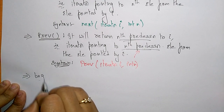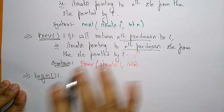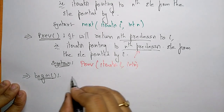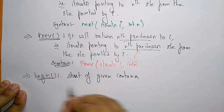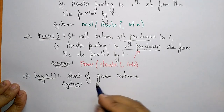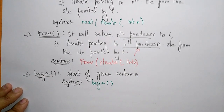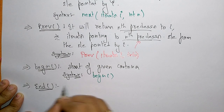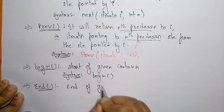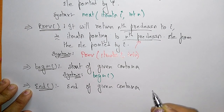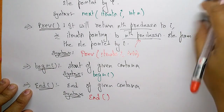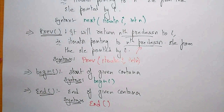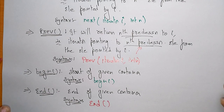The begin function returns an iterator to the start of the given container — the syntax is just begin() with no arguments. The end function returns an iterator to the end of the given container — syntax is end() with no arguments. These are the different operations on iterators in STL. In the next video, I'll explain function objects, which completes the Standard Template Library. Thank you.